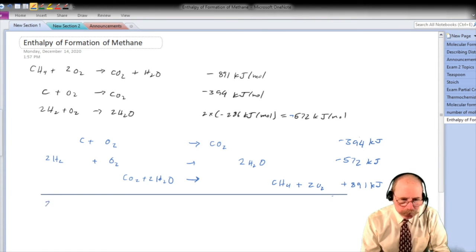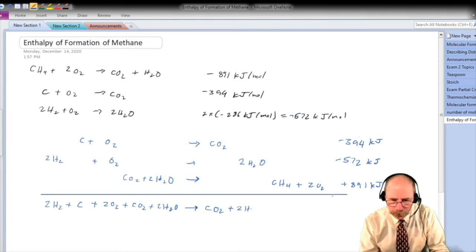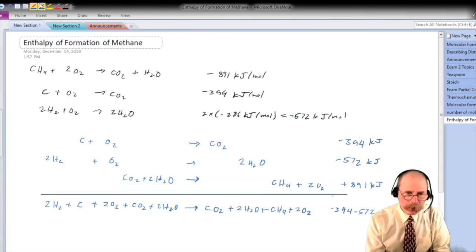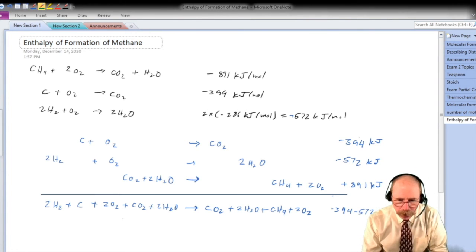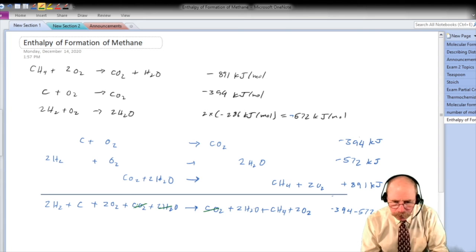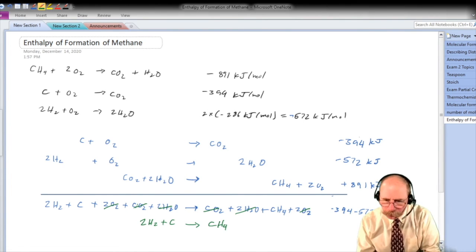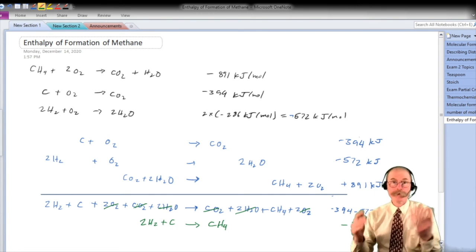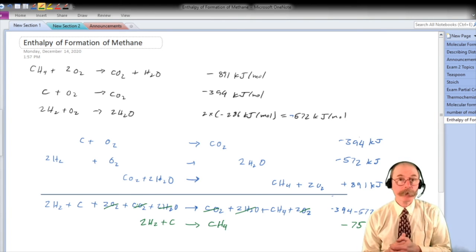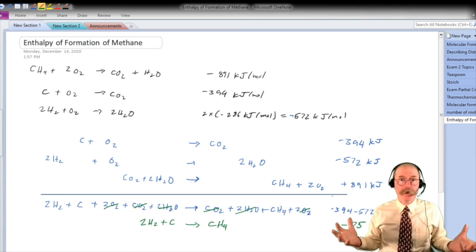Then we add it all up. Now we can get rid of the chemical substances that appear in the same way on both sides of the equation. On both sides we have CO₂, we have 2H₂O, and we have 2O₂. Those can come out of both sides. And then what's left is 2H₂ plus C gives you CH₄. Adding up the energies, for the result we get minus 75 kilojoules per mole, which means that it's exothermic to create methane from the elements carbon and hydrogen.